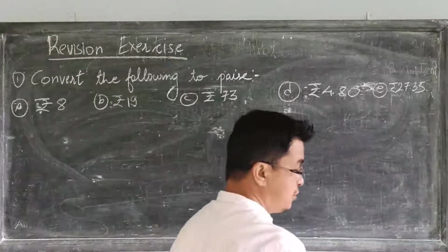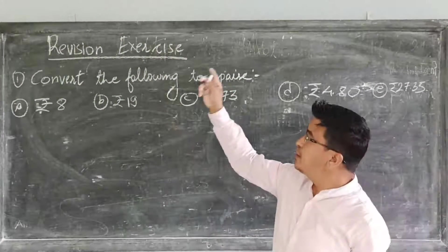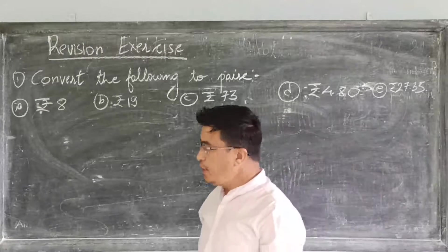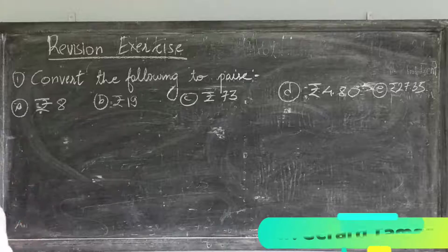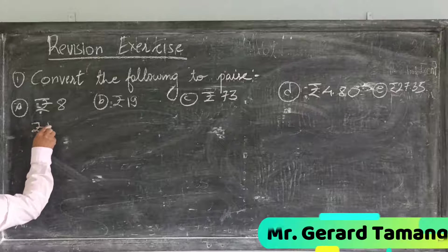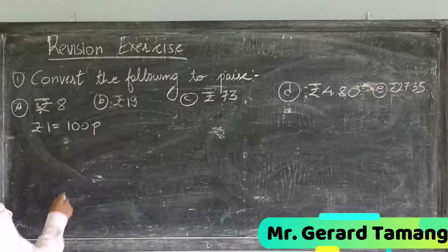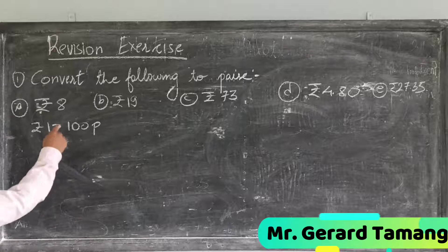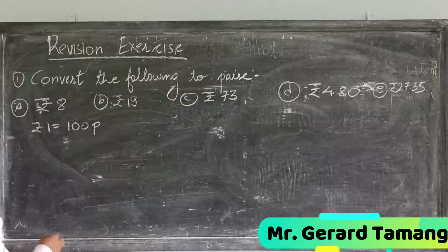Hello, class 3. Today we will do revision exercises, page number 104. Now, number 1: convert the following to paise. What we know is that 1 rupee is equal to 100 paise. So to convert 8 rupees into paise, what we have to do is multiply by 100.